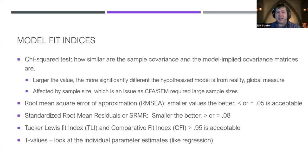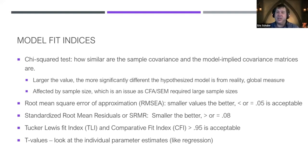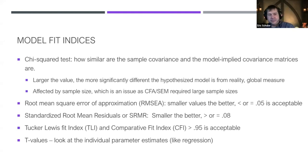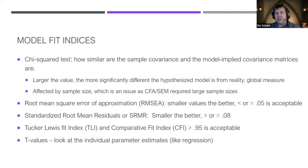Think of SEM as regression on steroids — it's really just a fancy regression, but the nice thing is you can have multiple outcomes, do complex mediation and moderation analyses, multi-level SEM, and more. For model fit, we look at the chi-square test — how our sample covariance and model-implied covariances align. A larger value means departure from the hypothesized model.